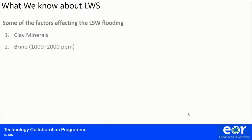The next important parameter is brine salinity. Numerous studies show that there should be a low salinity threshold in order to observe incremental recovery. This number is somewhere between 2,000 to 5,000 ppm, which is significantly lower than the salinity of formation brine. Regarding crude oil, polar components in the crude oil are necessary. From experiments with refined oil — keeping all parameters constant — we did not observe any extra recovery when adjusting the salinity of the injection brine. Similar reports indicated that both acidic and basic oils are suitable for low salinity water injections.